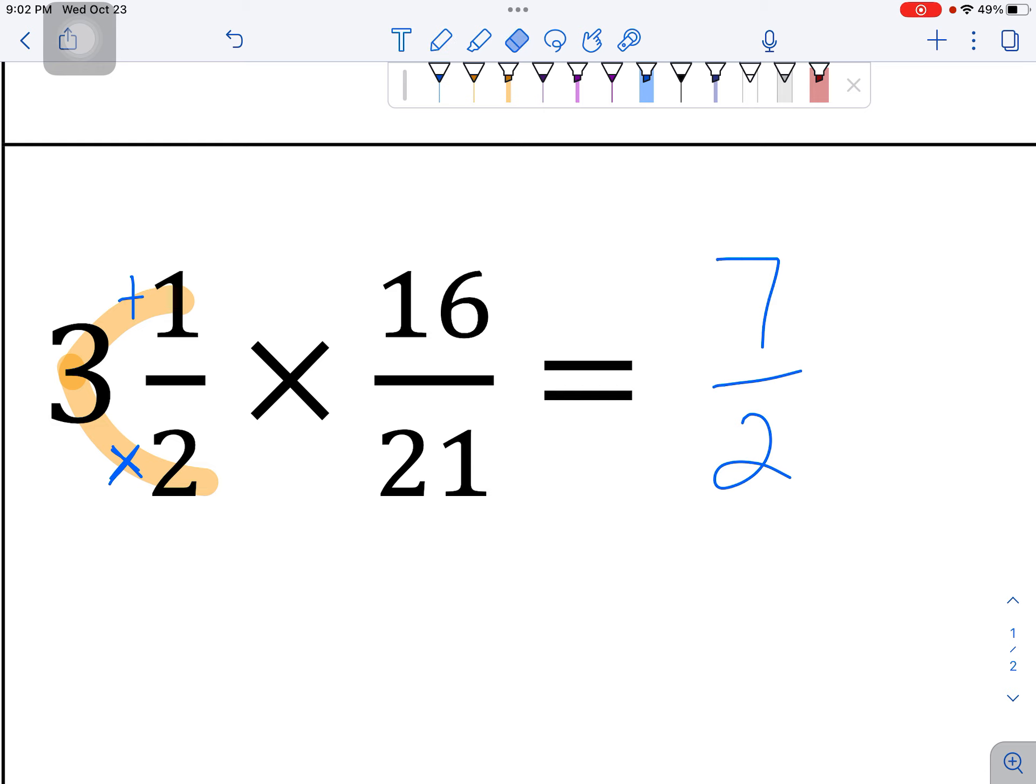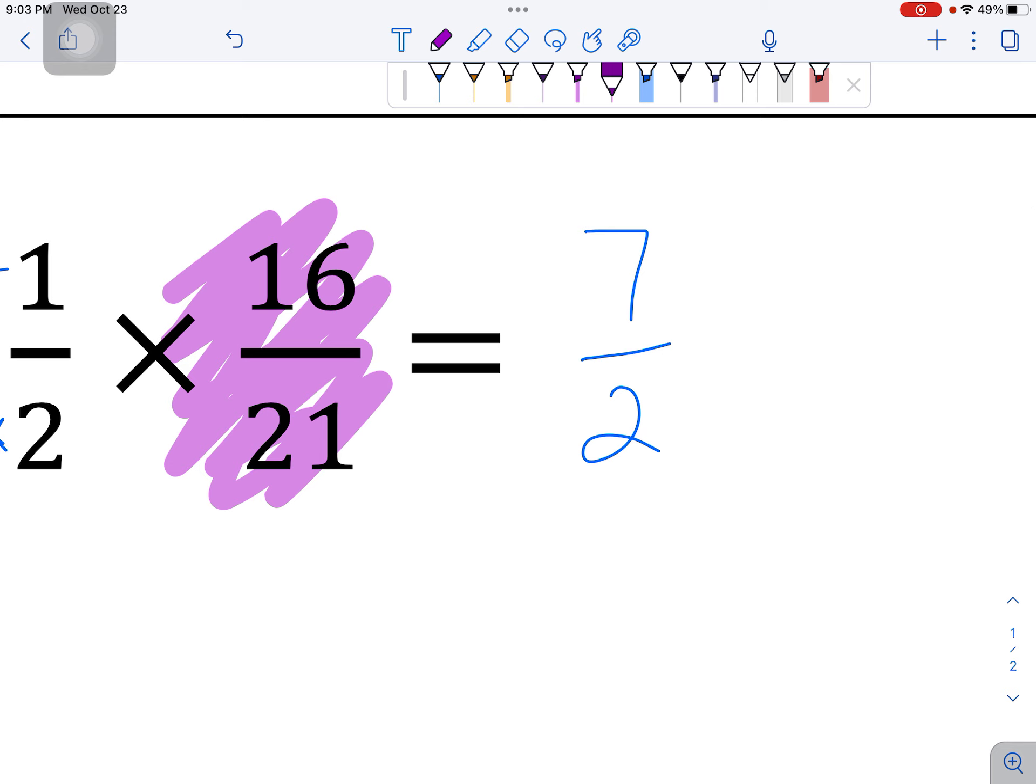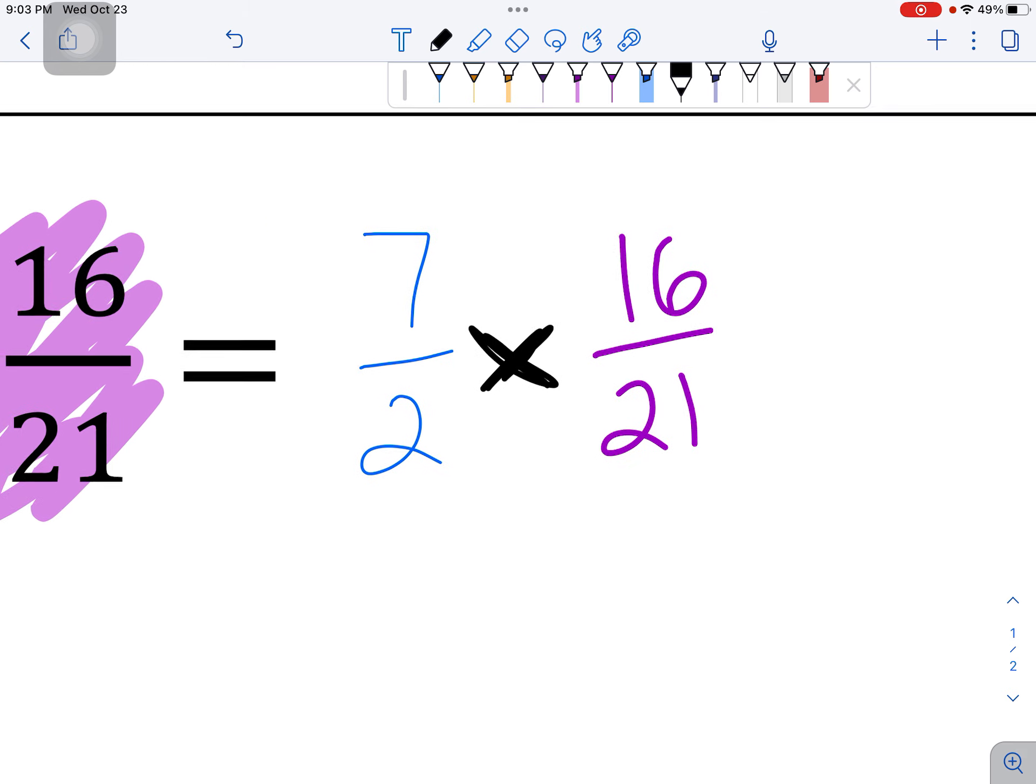The next part, the next factor, the next number in our times problem is 16 21sts. But there is no whole number. That's just a fraction. So I'm going to keep that as 16 21sts. And now I'll write the times in between. Here I could multiply across. Do you see why it might not be such a great idea to multiply across? I have no idea what 7 times 16 is. Honestly, I can figure it out. I know that 16 times 5 is 80. 16 times 2 is 32. Which means 7 times 16 is 112. But that's a really complicated way to do this. I don't want to have a fraction with 112 on the top. That sounds terrible.